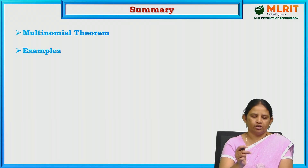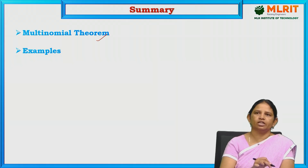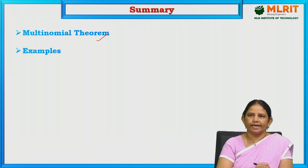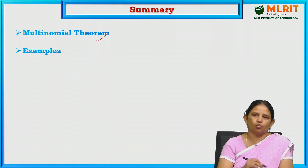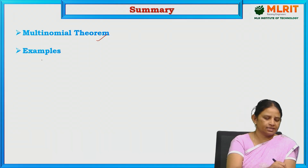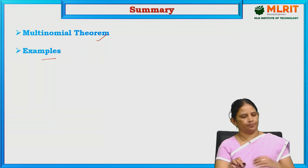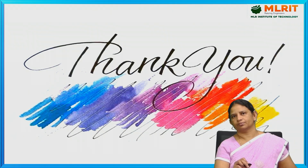Up to now, we have discussed what is meant by multinomial theorem, what is the expansion of multinomial theorem, and what is the formula to find out the coefficient in multinomial theorem. We understood all these things by taking some examples. Thank you.